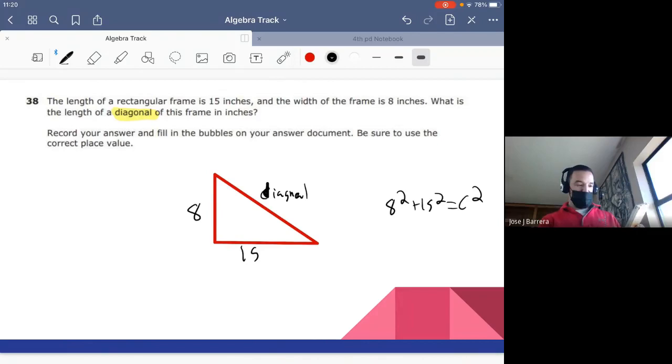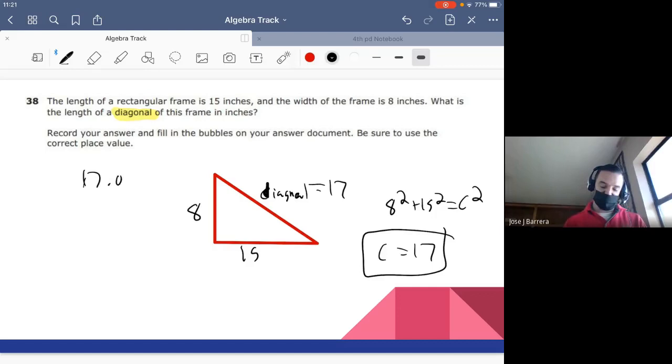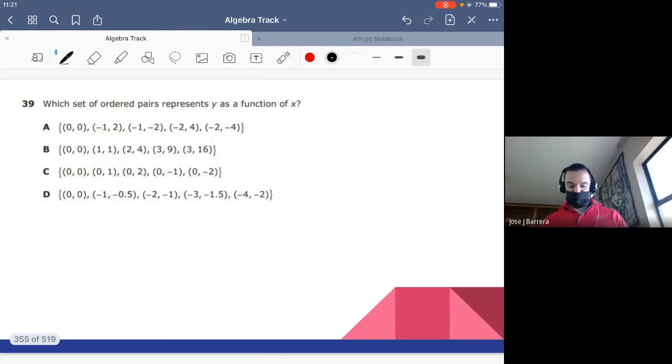8 squared plus 15 squared equals C squared. C squared. We're going to plug in this to our calculator. Menu, 3, 1. To put in our numerical solve. 8 squared plus 15 squared equals C squared, comma, C. And our answer or response gives us 17. C equals 17. That is the length of the diagonal. Make sure you grade it in correctly. 17.0 or just 17 on the side of the decimal.